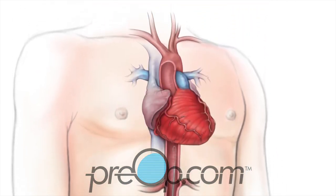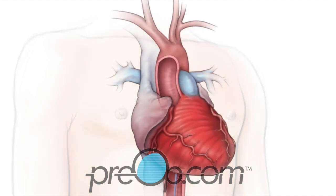Next, the long catheter is threaded through the guide in your artery up to your heart. Dye is given through the catheter and the x-ray camera is used to see it flow through the heart. The arteries that feed oxygen to your heart, the inside walls, and the shape of your heart are examined.